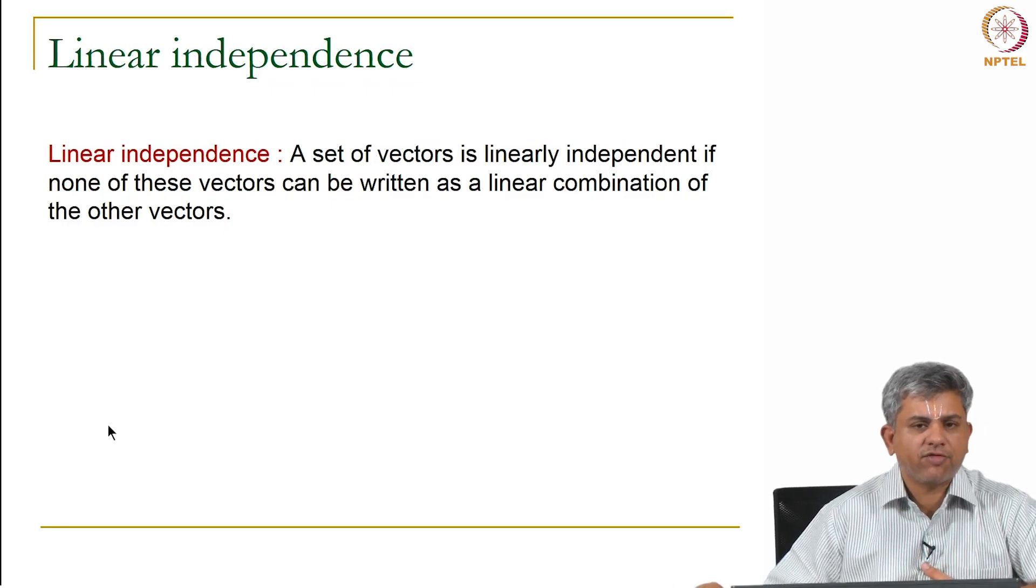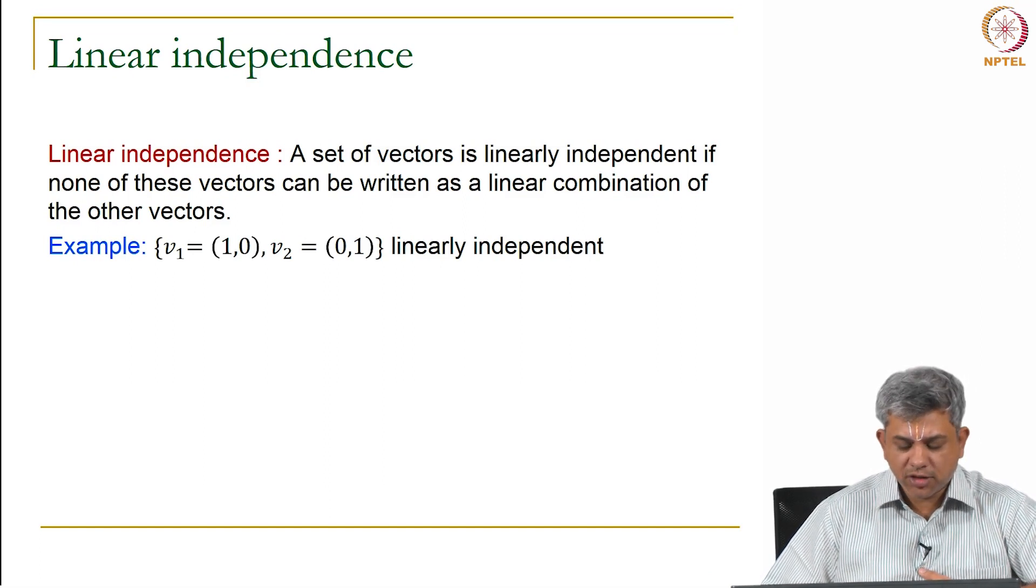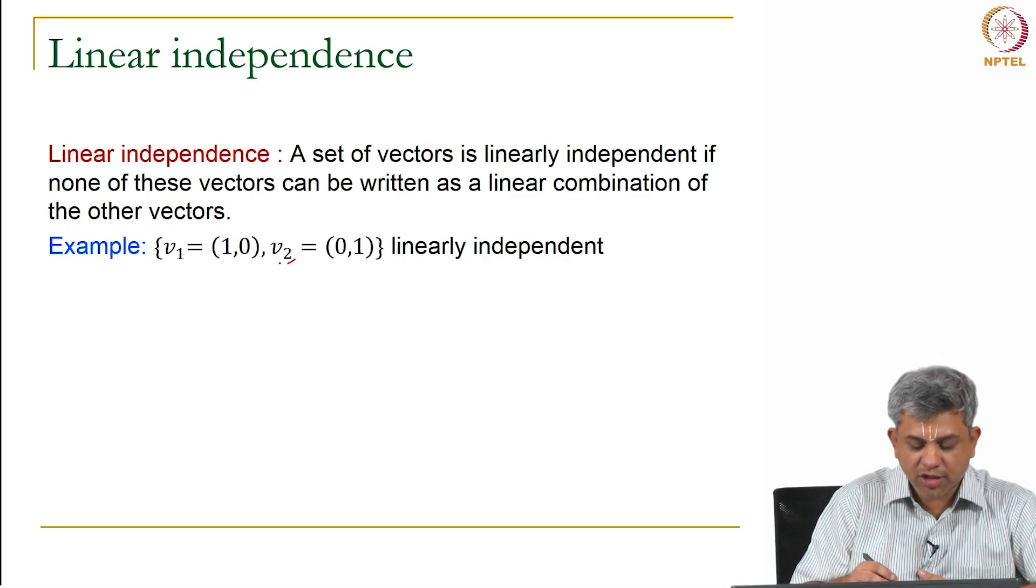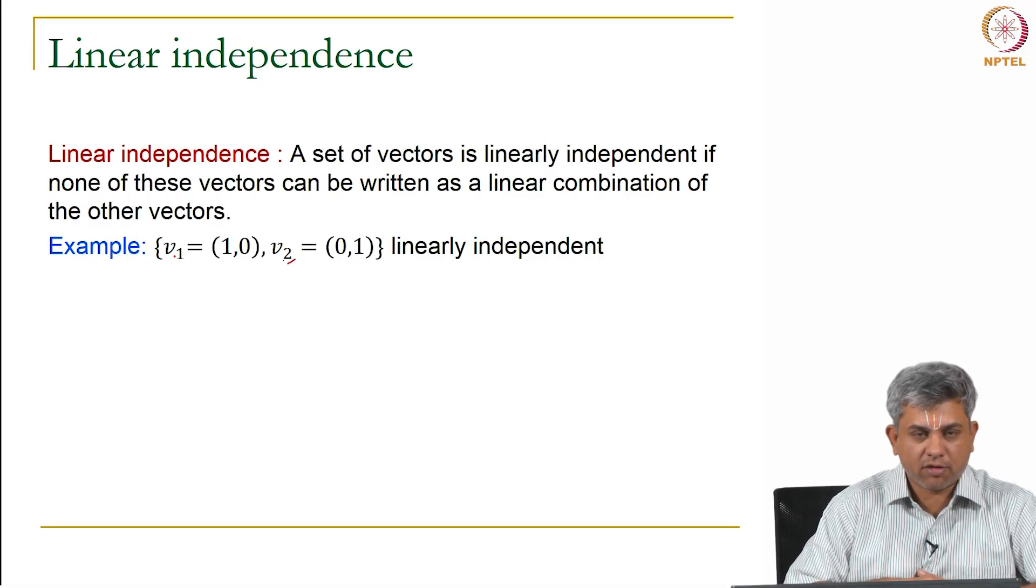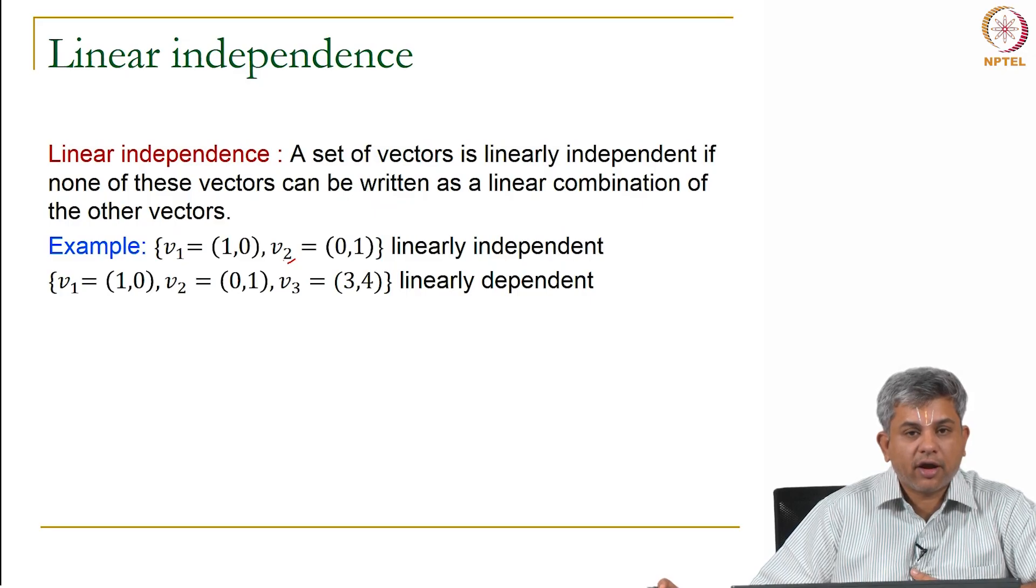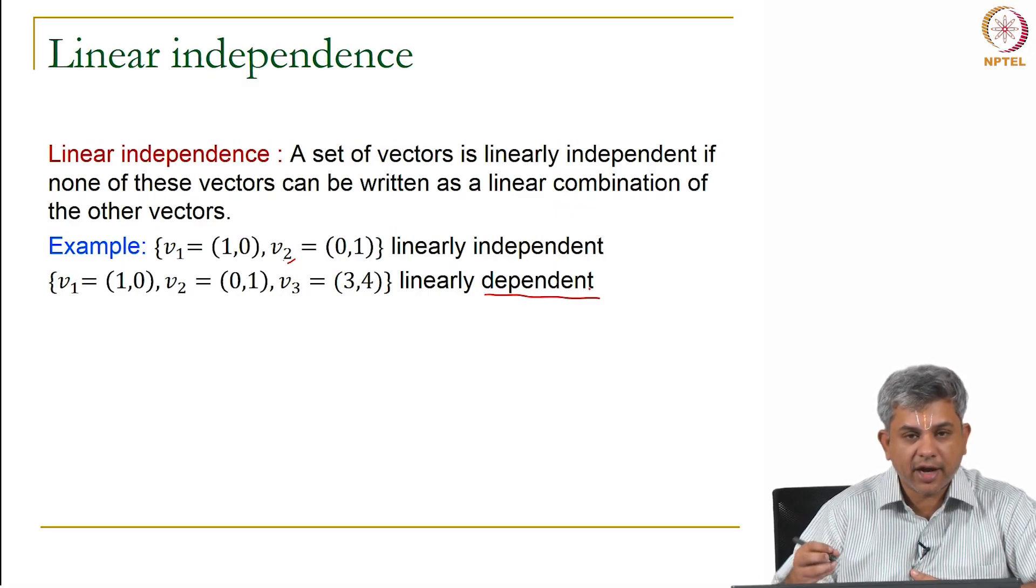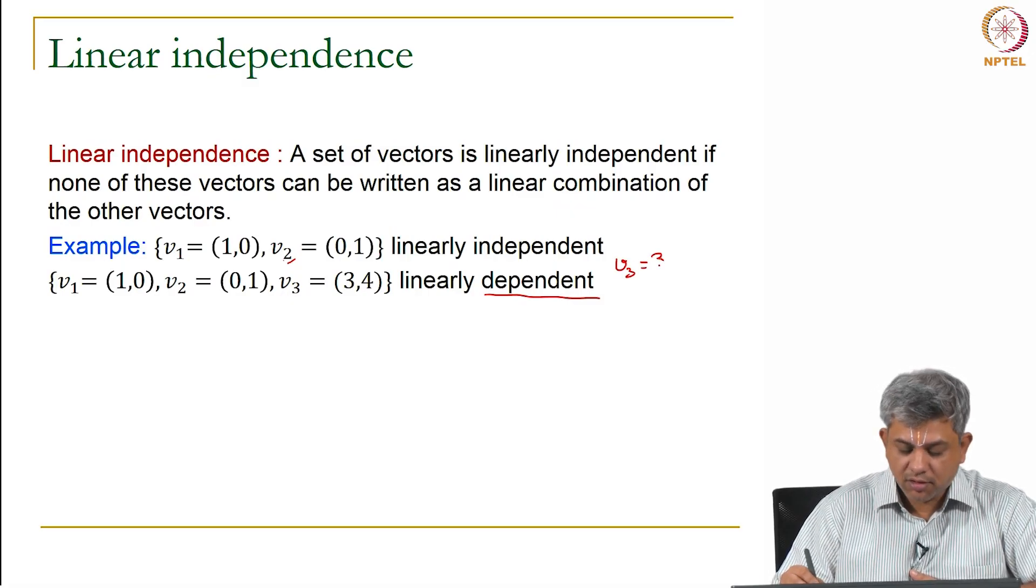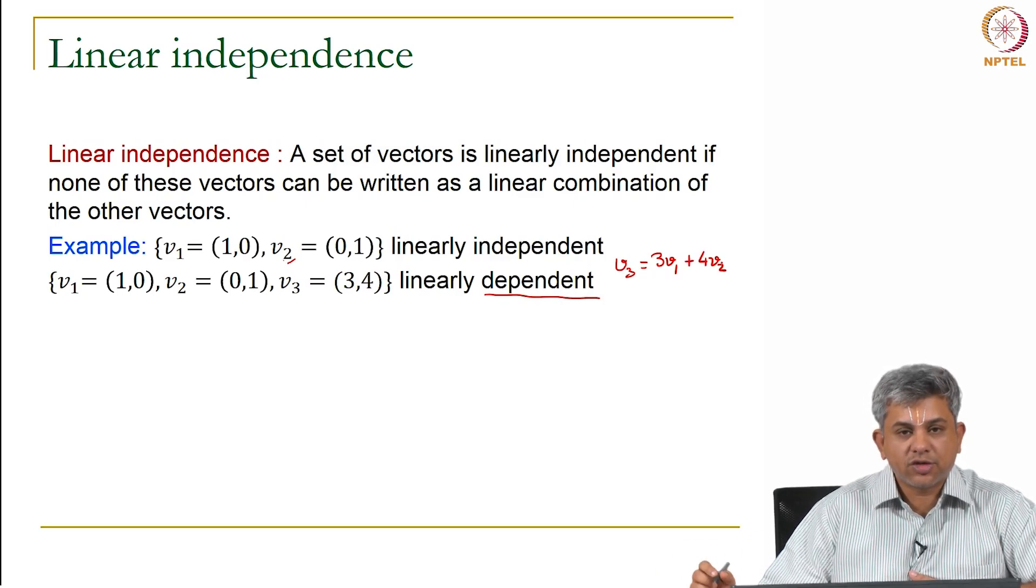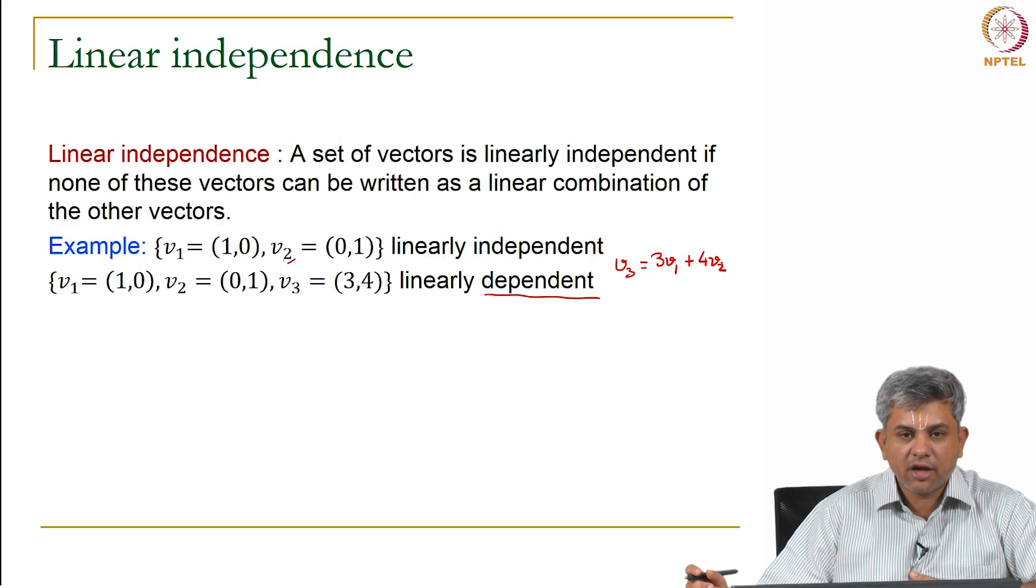If I have a set of vectors like [1,0] and [0,1], you cannot write V2 as a linear combination or any linear multiple of V1. Now suppose I take these three vectors: [1,0], [0,1], and [3,4]. These are not linearly independent—I would call them linearly dependent. Why? Because V3 is 3V1 + 4V2. Since V3 can be written as a linear combination of the other two vectors, these three vectors are not linearly independent.